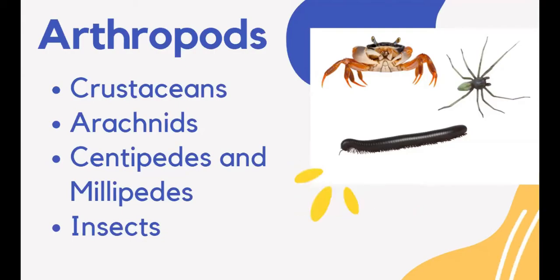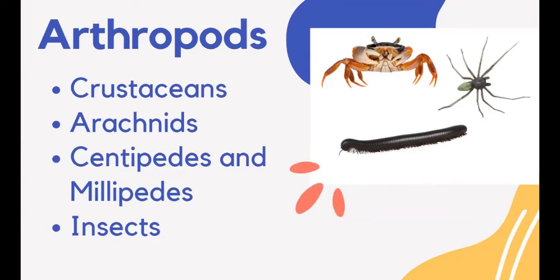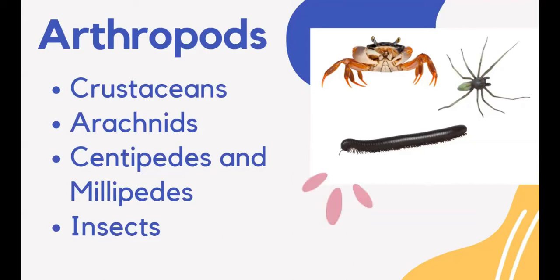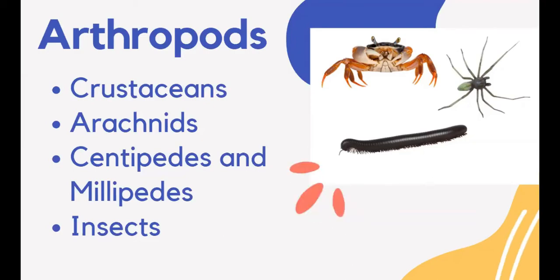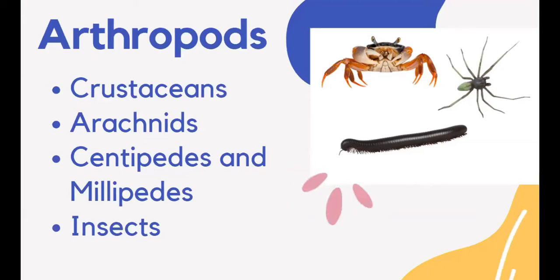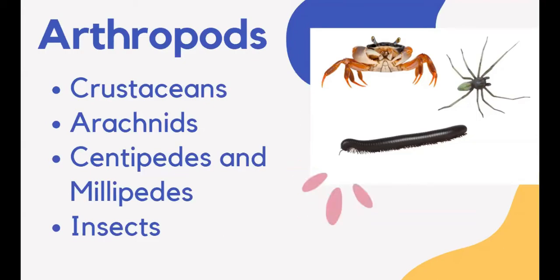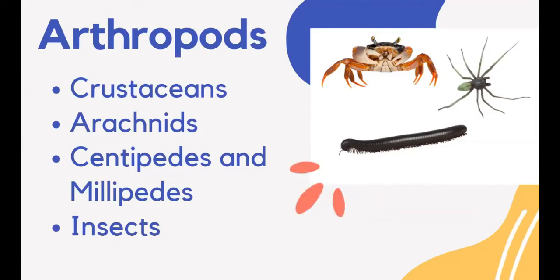Grasshoppers, beetles, dragonflies, and moths are insects. Like some crustaceans, they have three body segments. Many insects are aerial, with a pair of wings attached to the thorax. Insects have a pair of antennae for smelling and tasting. They also have simple eyes and a pair of compound eyes, which allow butterflies and bees to see in color.